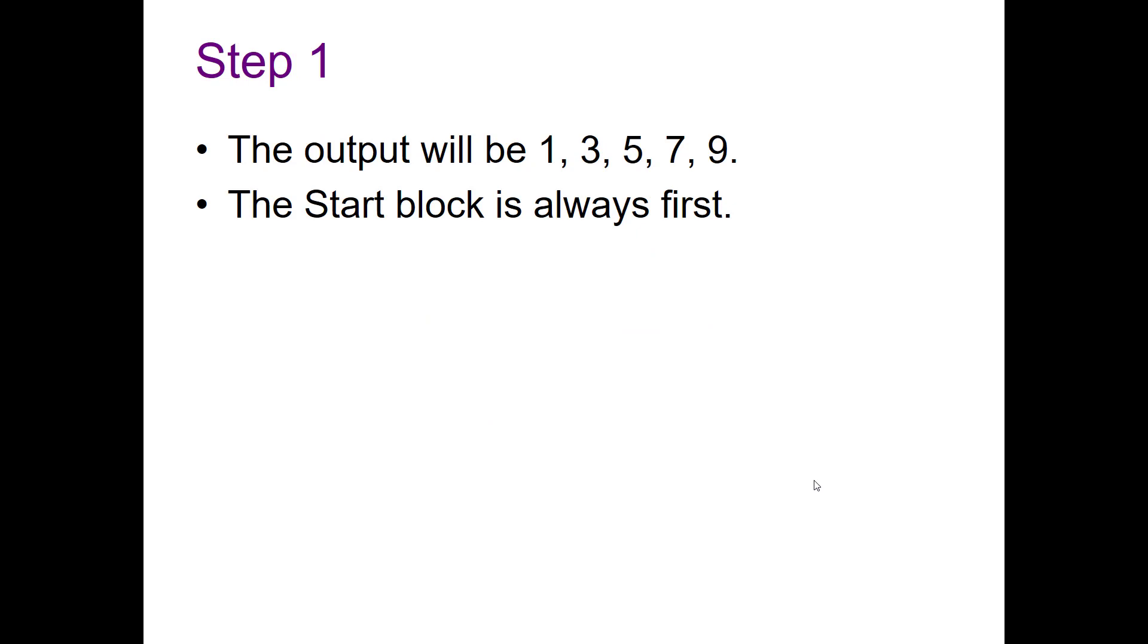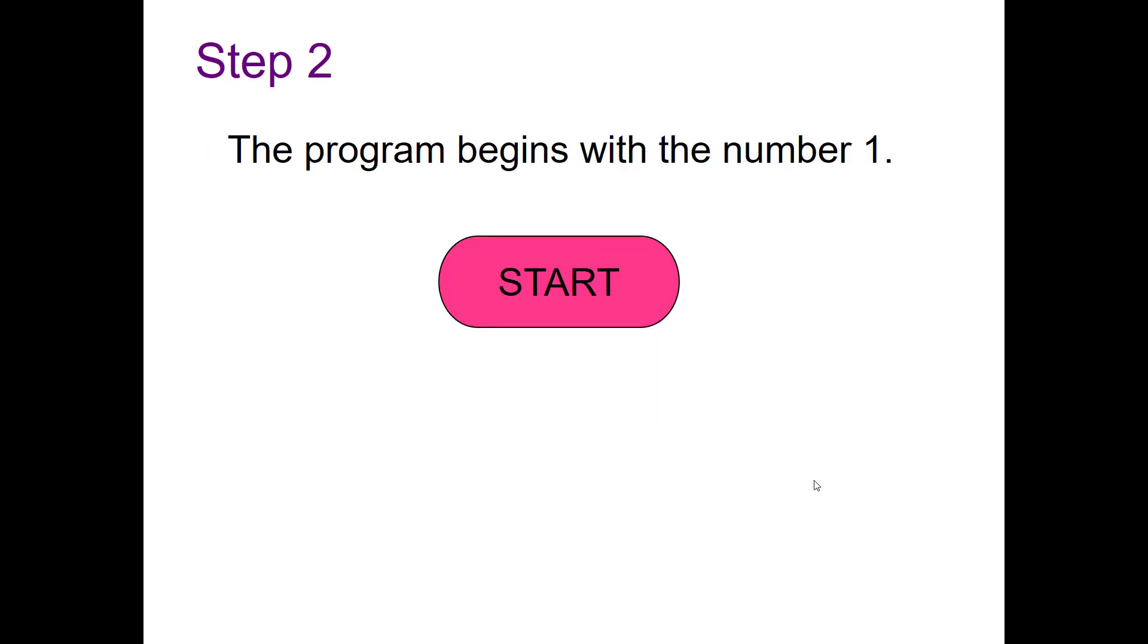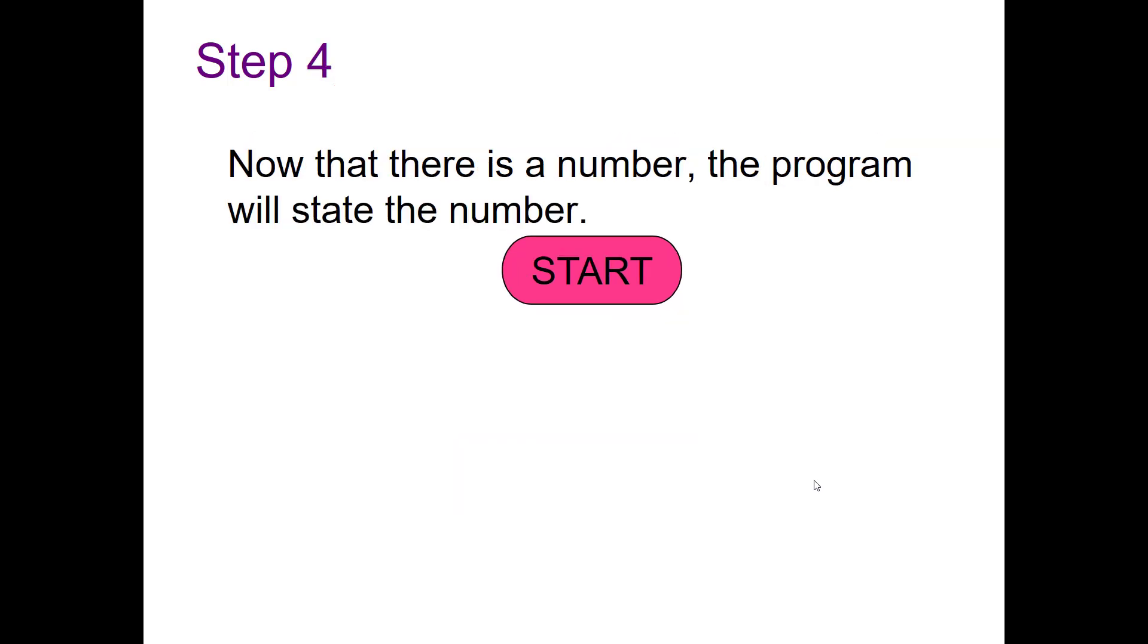The outputs going to be 1, 3, 5, 7, and 9. The start block, again, it's going to always be first. The program is going to begin with the number one, so input one. Now that there's a number, the program will state the number: say number.